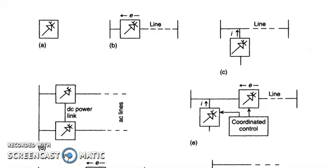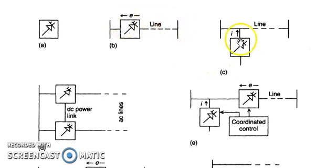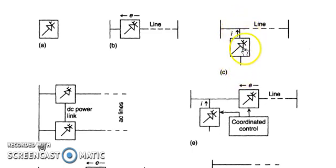As we were discussing the different kinds of FACTS controllers, one classification is based on how the controller is connected or interfaced with the transmission system. In figure B, the controller is added in series with the transmission line — this is an example of series compensation. The shunt connection, by contrast, is connected on the load side of the transmission line at the point of compensation. That is the basic difference between series and shunt compensation.